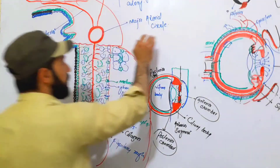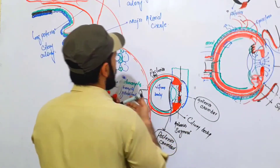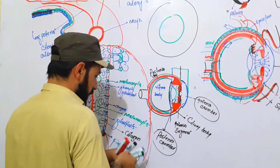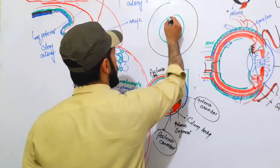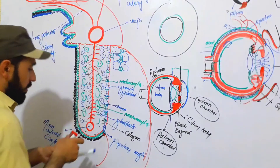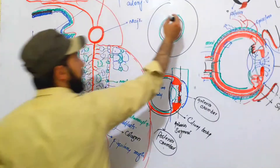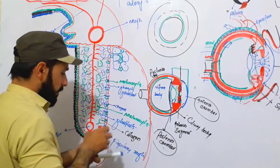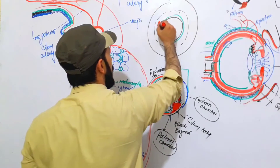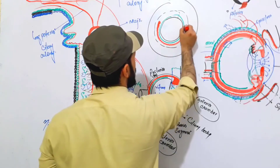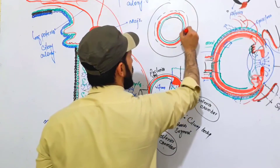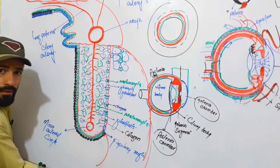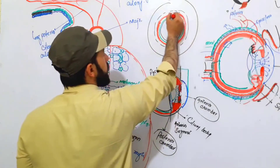If you look at the eyeball structure — here is the cornea, and behind the cornea you have the iris, and above the iris on all sides you have the ciliary body. The major arterial circle is present all over the ciliary body, forming a complete circle around the entire eye on all sides.